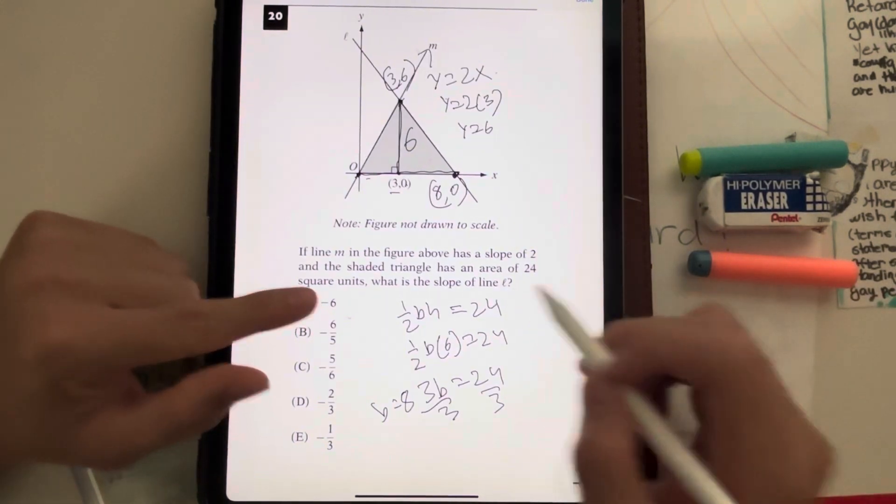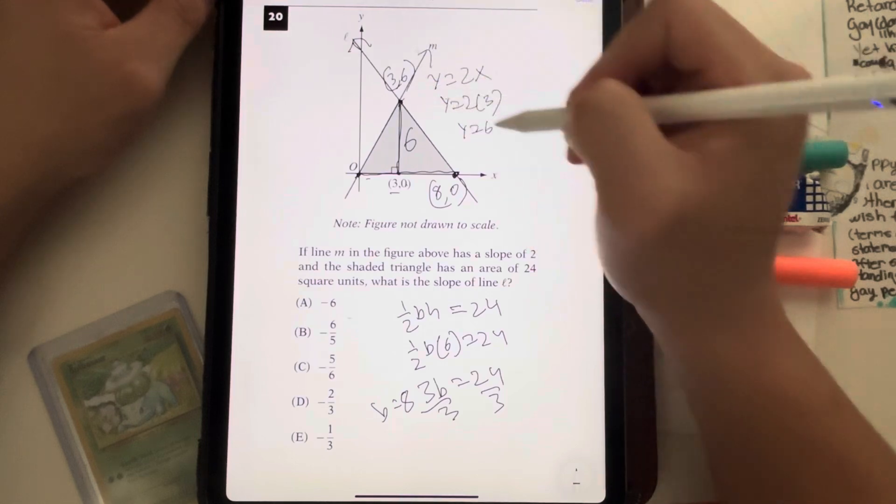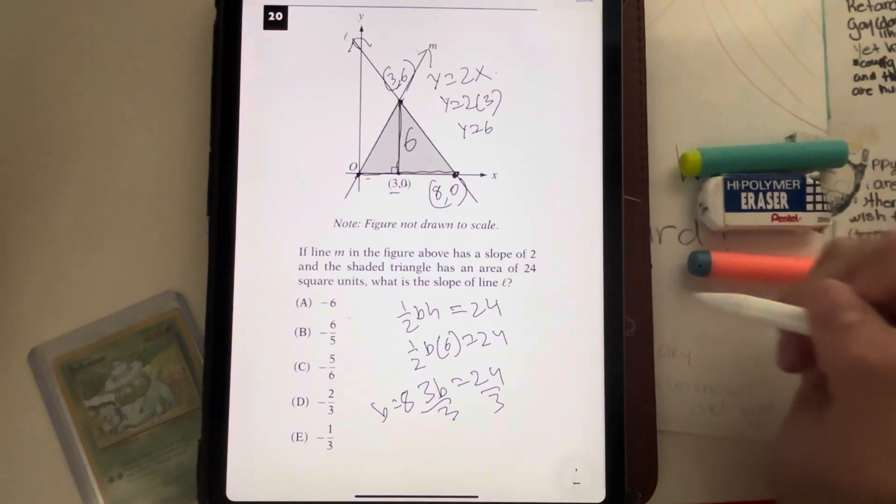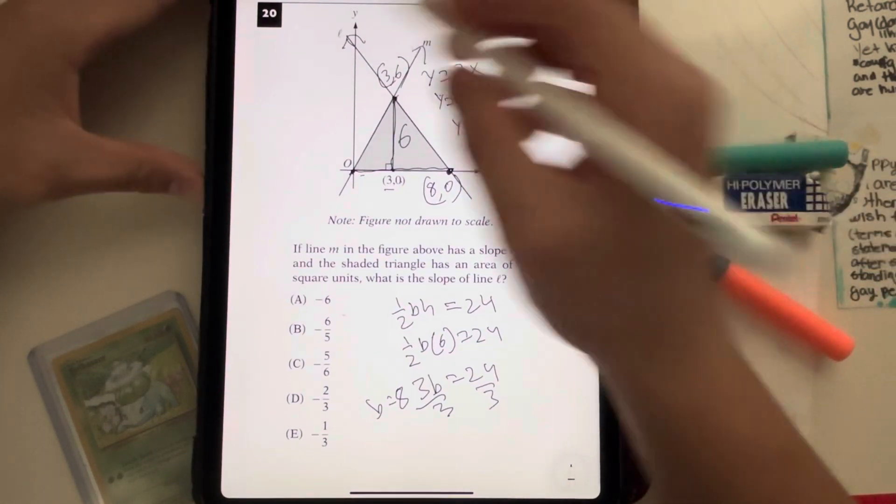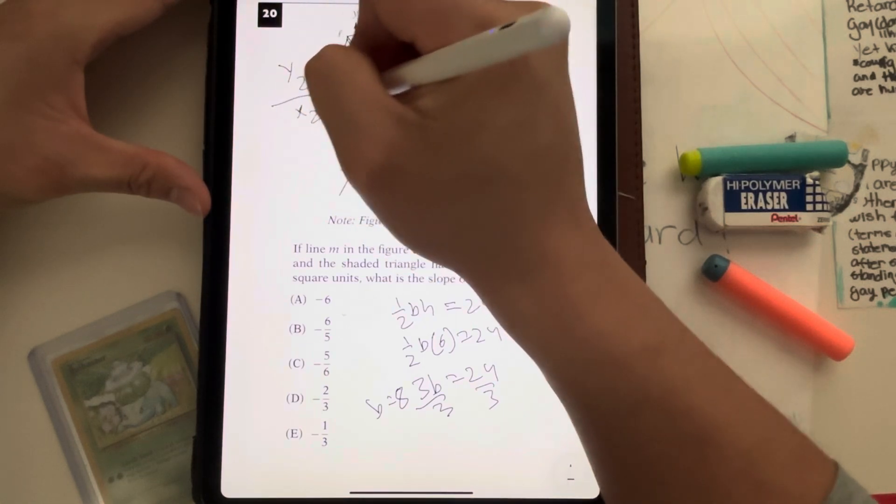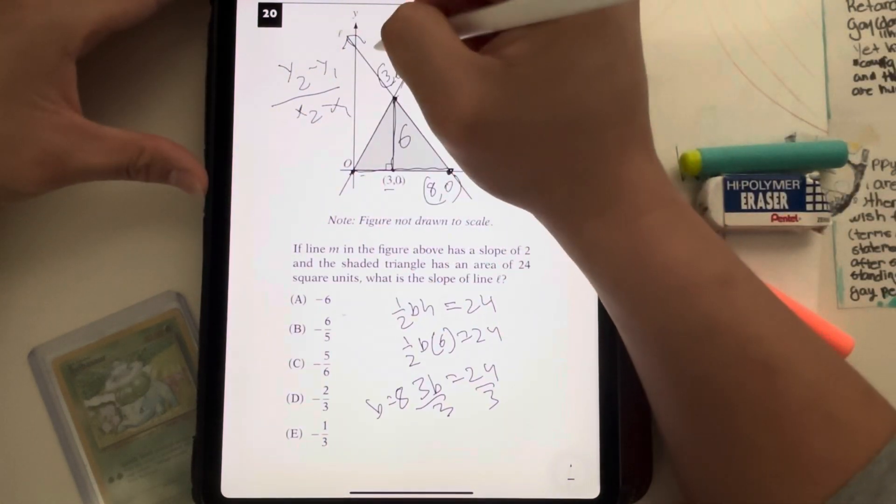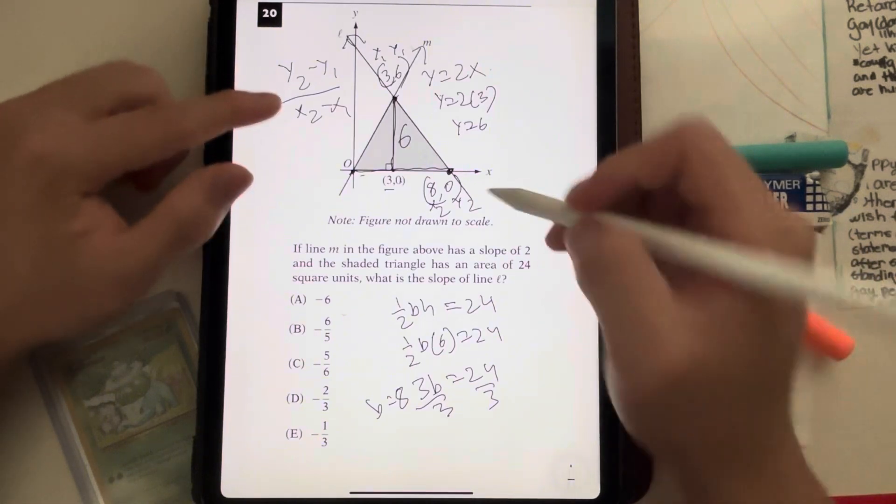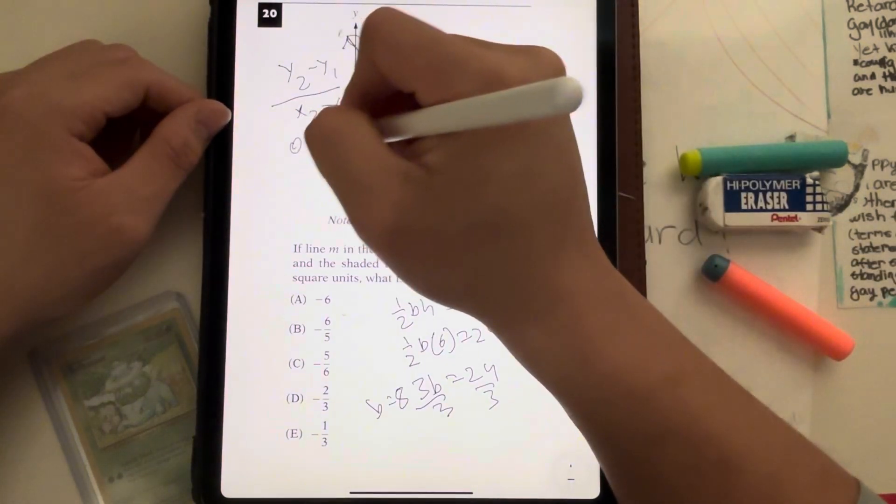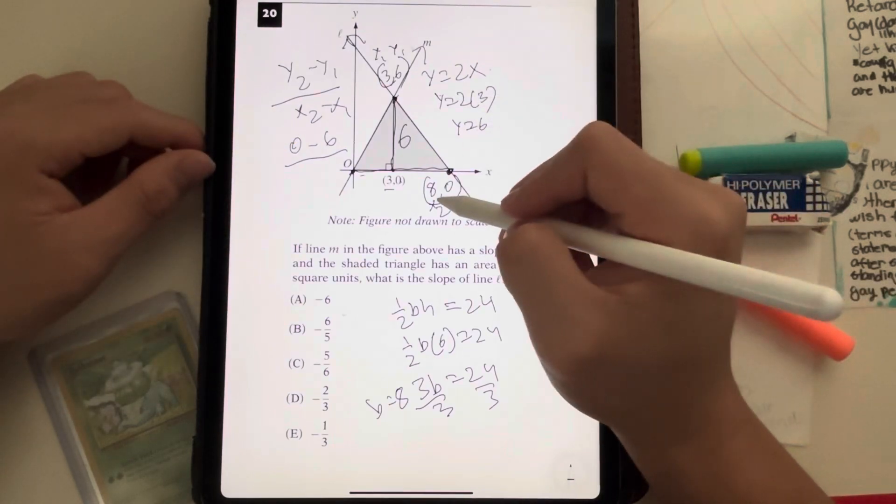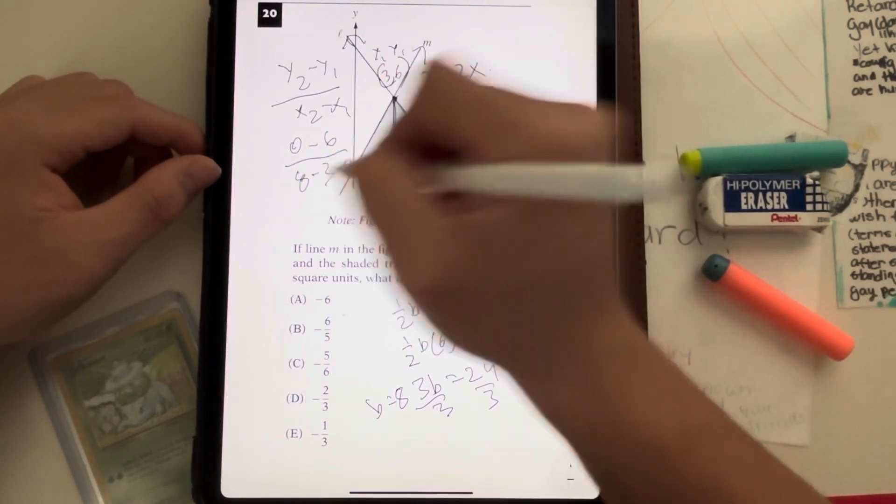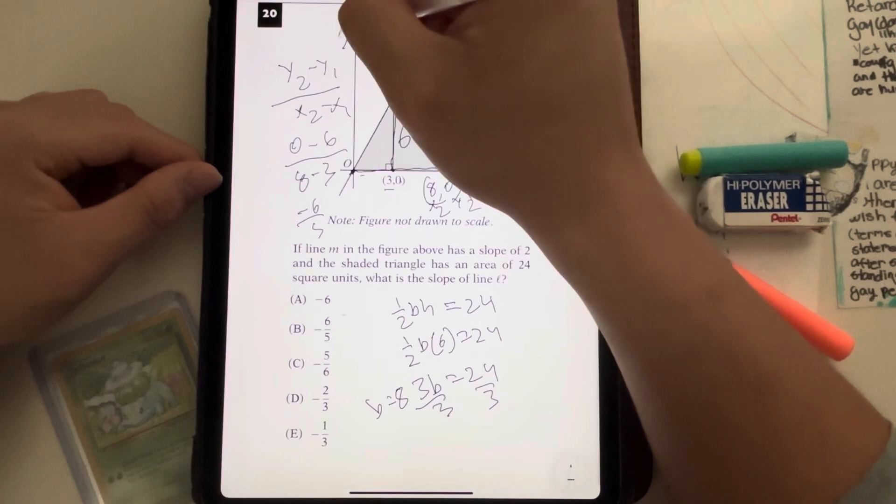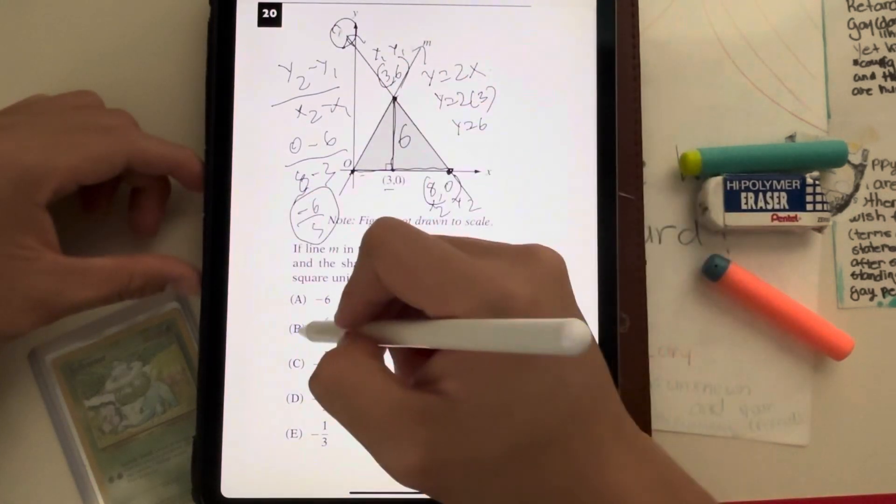Now, what do I do to find the slope of line L? Slope of line L, which is this line right here, passes through what two points? It passes through this point, 8, 0, as well as this point, 3, 6. So we have to use this equation, where the slope is y2 minus y1 over x2 minus x1. I'm going to call this x1, y1, and this x2, y2. So plug those points in. y2 minus y1, that's 0 minus 6, divided by x2 minus x1, which in this case is 8 minus 3. 0 minus 6 gives me negative 6, and 8 minus 3 gives me 5. So it means my slope for line L is going to be negative 6 over 5, also meaning my answer has to be choice B.